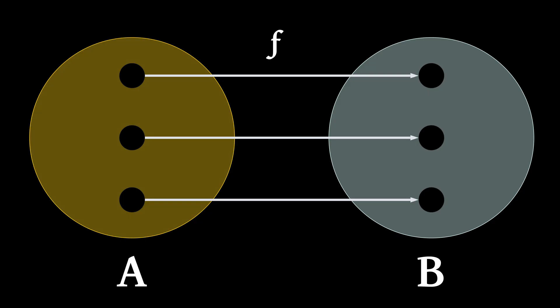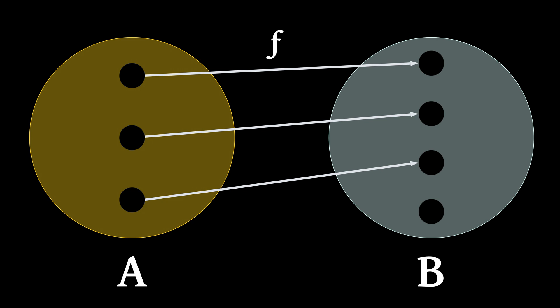Let's look at a few examples that map elements from one set to elements in another. This first function is injective — every element in set A is distinctly mapped to elements in set B; that is, no two elements in the domain are mapped to the same element in the codomain. Let's look at another example. This function is also injective: every element in set A is distinctly mapped to elements in set B, i.e., no two elements in the domain are mapped to the same element in the codomain.